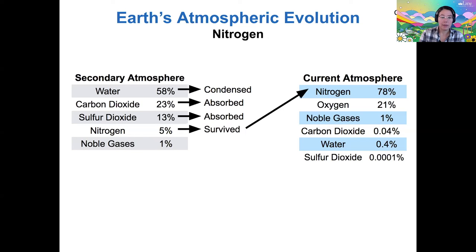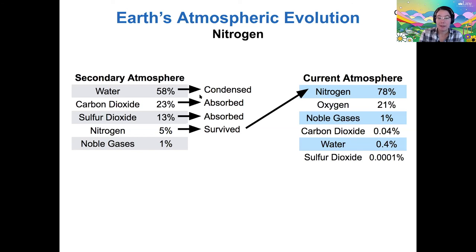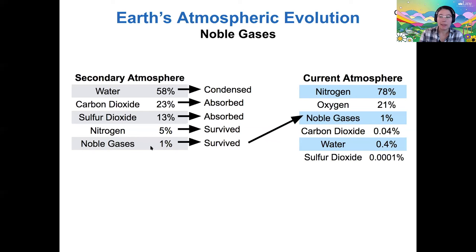Finally, nitrogen was only 5% of our initial secondary atmosphere, but the total amount of it hasn't changed. Nitrogen doesn't react with other things very well, so it survived. Now it is the largest component of our atmosphere simply because it didn't have these other pathways it could follow — nothing could happen to it, and it persists unchanged. We also have about the same amount of noble gases as before. This is the evolution of Earth's atmosphere from the secondary atmosphere created by volcanoes to the atmosphere we have today.